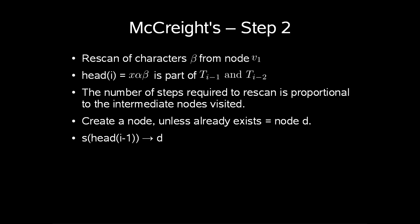The next step we do is a rescanning of characters beta from node v_2. It is certain that beta can be read from this position because head(i-1) equals x alpha beta. x alpha beta is part of T_{i-1} and T_{i-2}, which means that alpha beta is part of T_{i-1}. Note that rescanning needs to analyze only the first characters on the edge on the path because we know that beta is part of our tree. It means that the number of steps required by rescanning is proportional to the intermediate nodes visited during the traversal of beta.